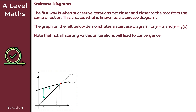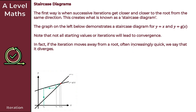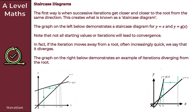Not all starting values or iterations will lead to convergence. If the iteration moves away from a root, often increasingly quickly, we say that it diverges. The graph on the right demonstrates an example of iterations diverging from the root. We have x₀ as our starting value, and by using iteration we obtain x₁ and x₂, but we're getting further and further away from the root — the point of intersection. With each iteration we're actually getting further away from what we want to converge to. So this is an example of divergence.